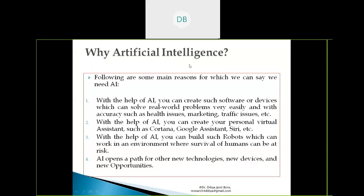Why is artificial intelligence needed? There should exist some reasons why we need to develop AI-based systems. With the help of AI, you can create software and devices which can solve real-world problems very easily and with accuracy. These two words — easily and accurately — are very important. We can also solve problems, but complex problems may take us more time. With AI-based machines, you can solve them easily and with more accuracy. That's why AI is being used in different areas like health sciences, marketing, and graphics.